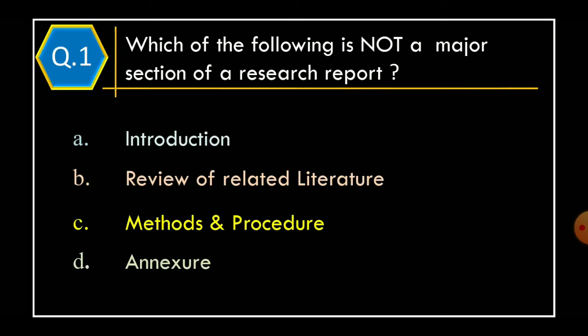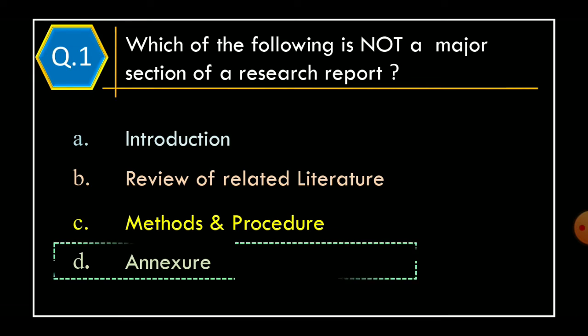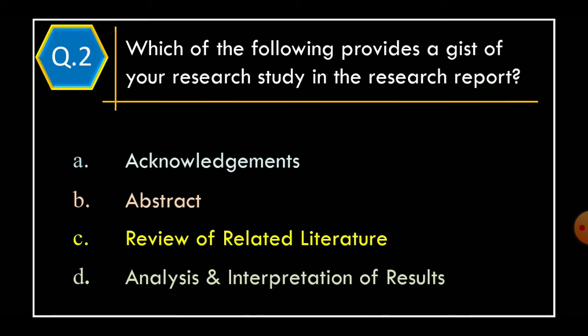Which of the following is not a major section of a research report? Option A: Introduction. Option B: Review of Related Literature. Option C: Methods and Procedure. Option D: Annexure. The correct option is Option D, Annexure.